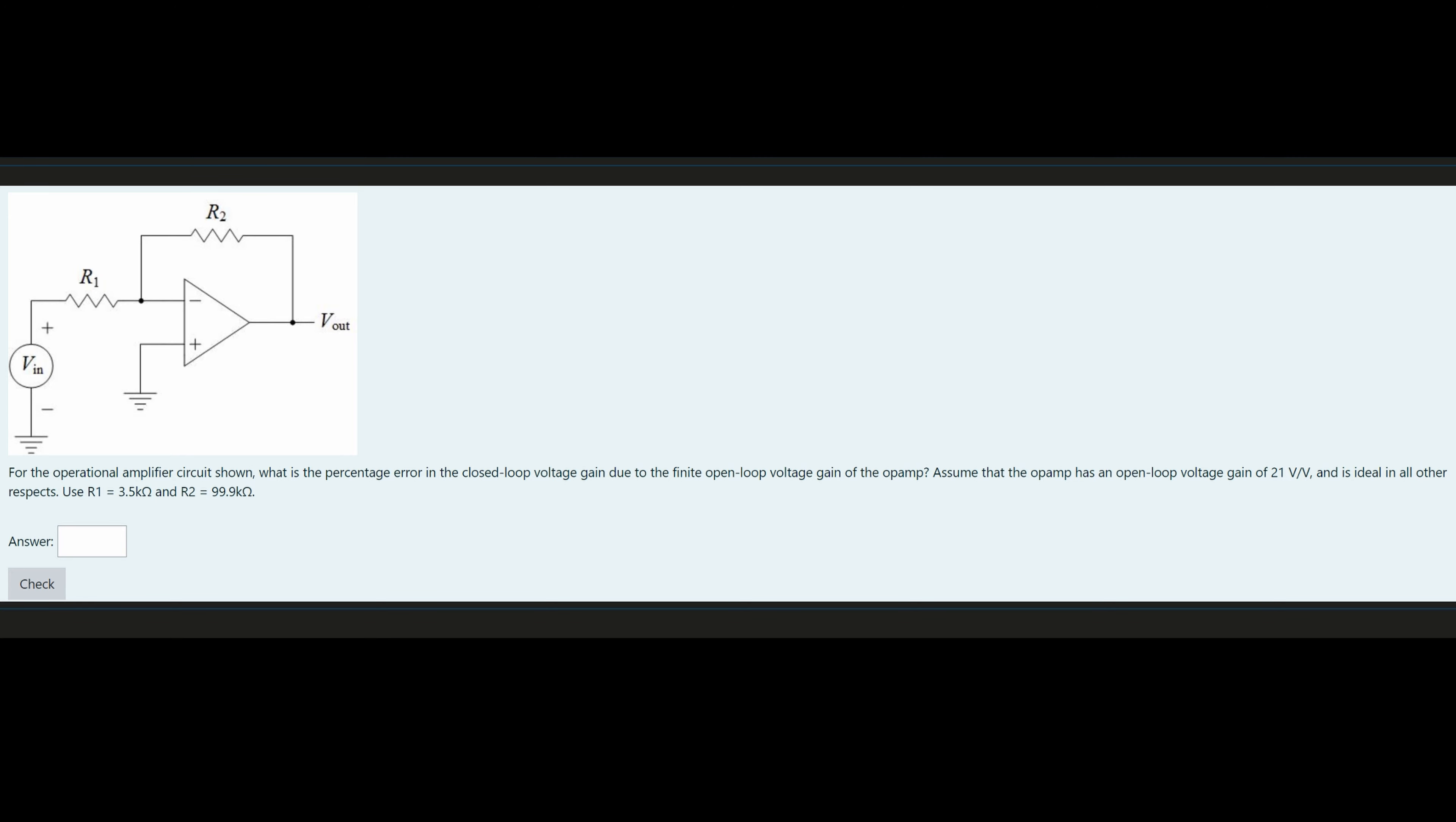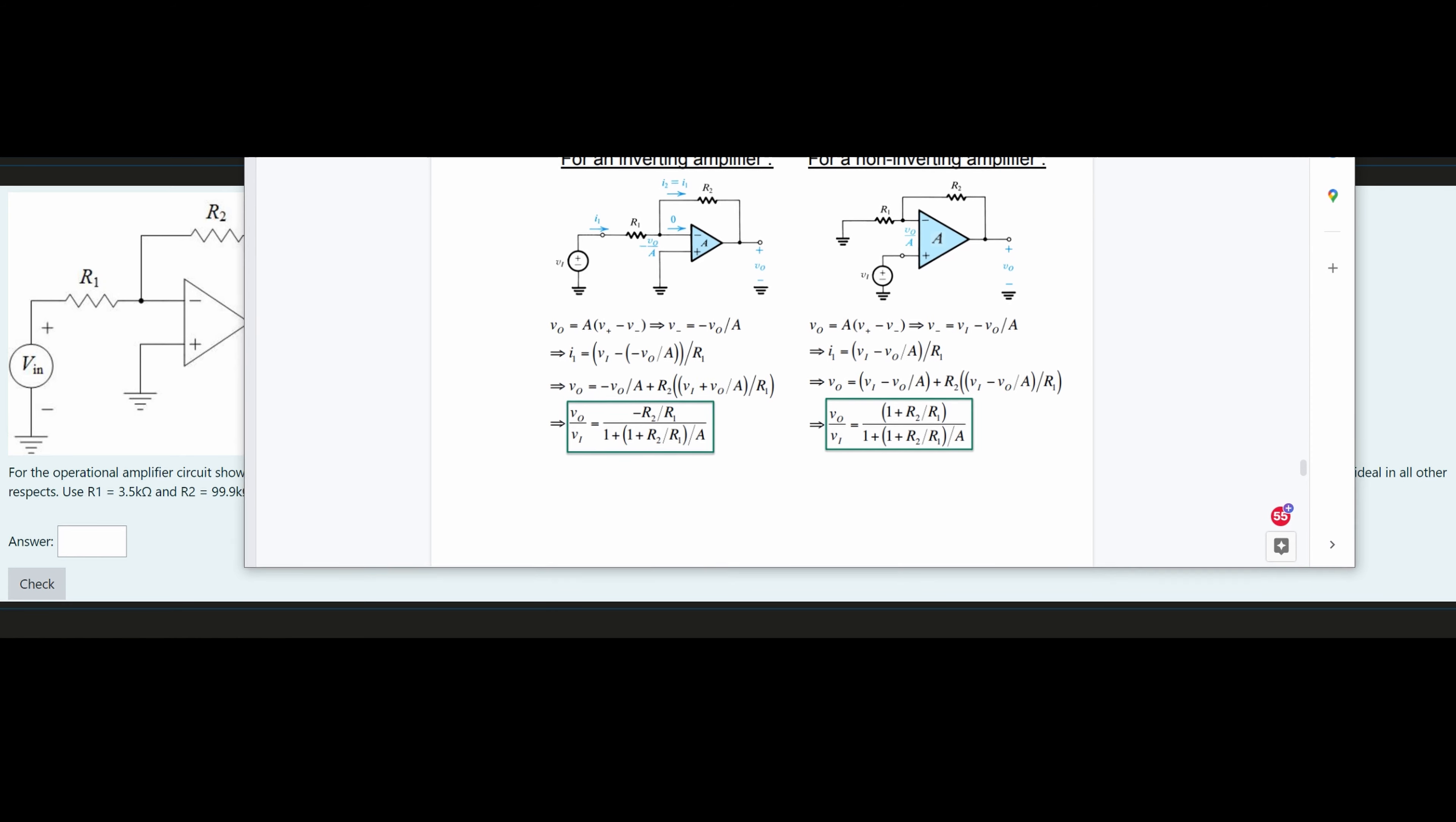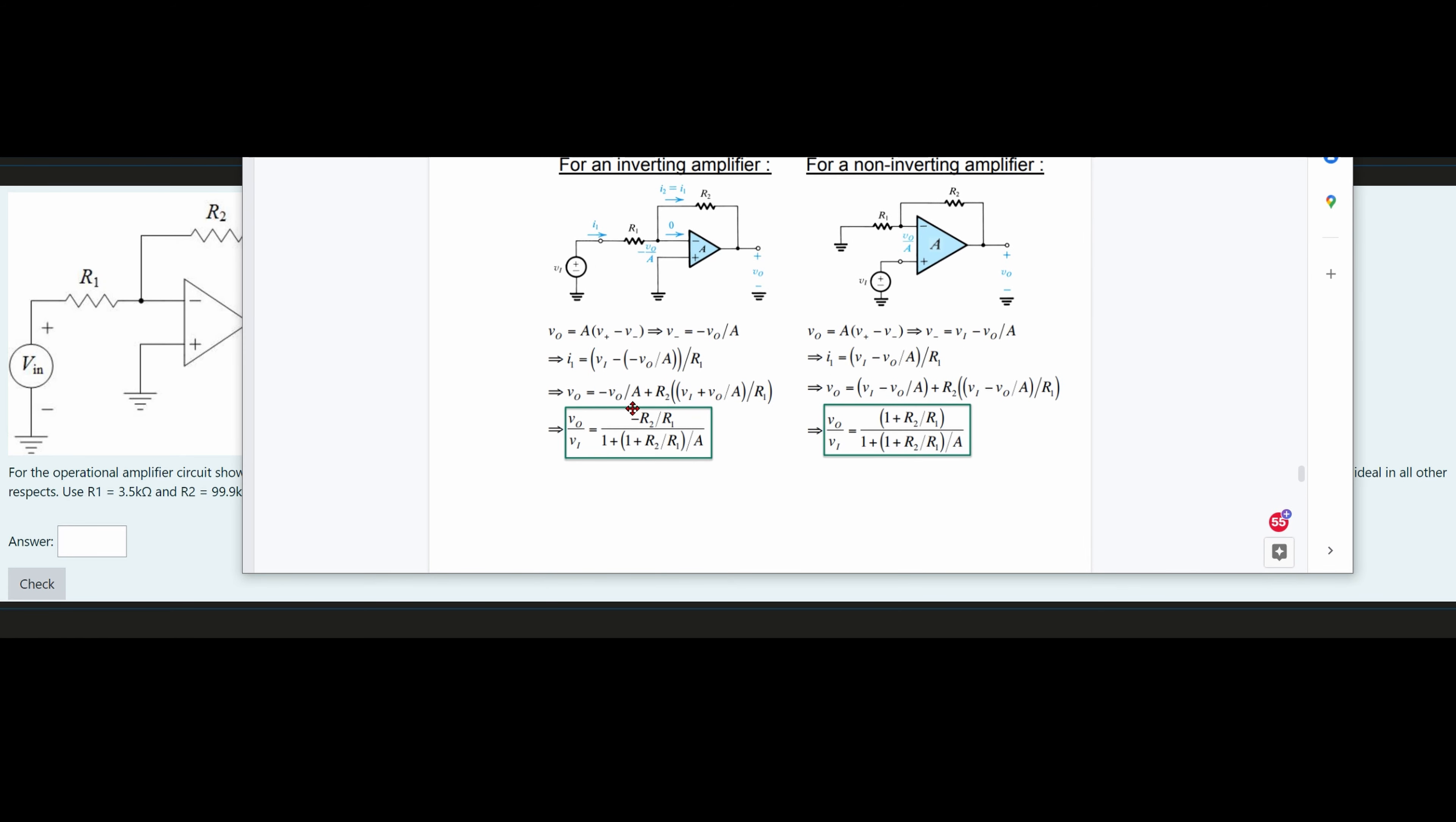We can assume that the op amp has an open loop voltage gain of 21 volts per volt and is ideal in all other respects. And then we're given R1 and R2. To solve this, we would look in the notes linked below the like button, and we have a formula, an equation for an inverting amp and a non-inverting amp.